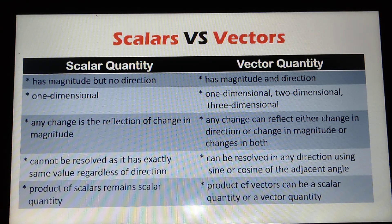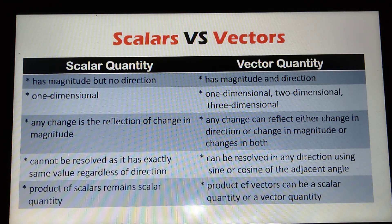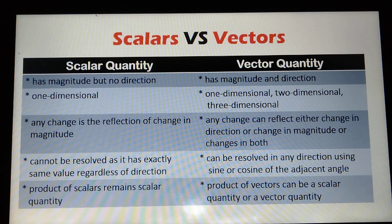The second difference is that scalar is one-dimensional, while vector quantity can be one-dimensional, two-dimensional, or three-dimensional. One-dimensional is the motion along a straight line. For example, a car moving on a straight road, or a person walking down a hallway.